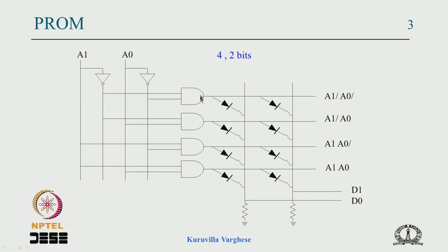For n inputs there are 2n vertical lines representing n inputs and their complements, and 2^n AND gates representing all min terms — each AND gate has n inputs selecting the appropriate min term. You program the truth table by blowing fuses. For multiple outputs, the same min term can be shared between outputs — one output may not use a min term while another does, or both may use it.